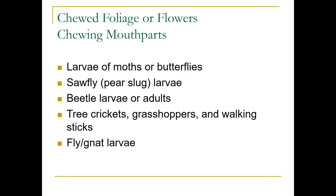Some insects have chewing mouthparts, and these include the larvae of moths or butterflies, or caterpillars, sawflies — which are not flies. They're also called pear slugs or rose slugs. They're not slugs either, and it's only the larvae. They're related to wasps. Beetle larvae or adults all have chewing mouthparts. Tree crickets, grasshoppers, walking sticks, and fly or gnat larvae as well.